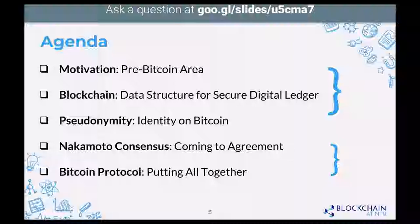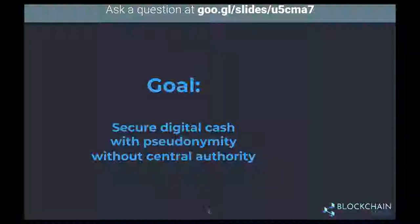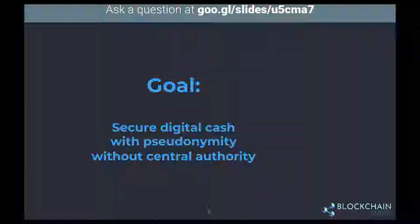We'll put everything together to present a holistic, detailed view of the protocol. The goal throughout these two lectures is to build a secure digital cash with pseudonymity, without central authorities. In the last workshop we solved the first two parts using a modular approach, decomposing the Bitcoin protocol into different components. We covered data structure and cryptography to build a secure digital ledger, and introduced identity on Bitcoin to achieve pseudonymity.